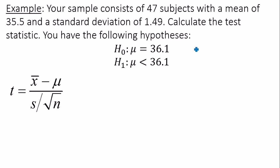All of these variables are given to me in the question here. My sample consists of 47 subjects, so sample size is 47. The mean of the sample x bar equals 35.5. The standard deviation S of my sample is 1.49. And then my population mean, the value that I am dealing with here is mu equals 36.1.